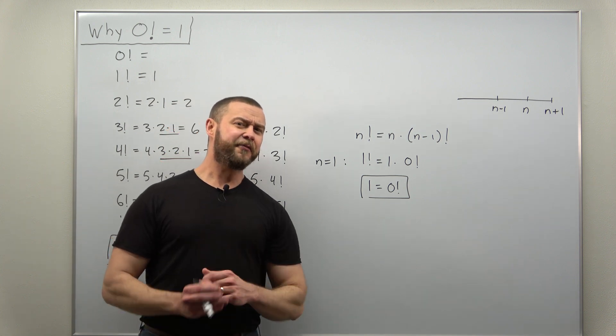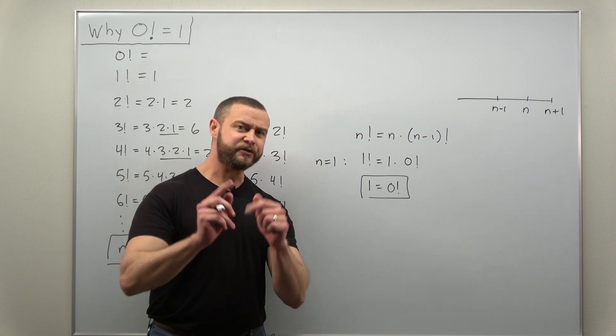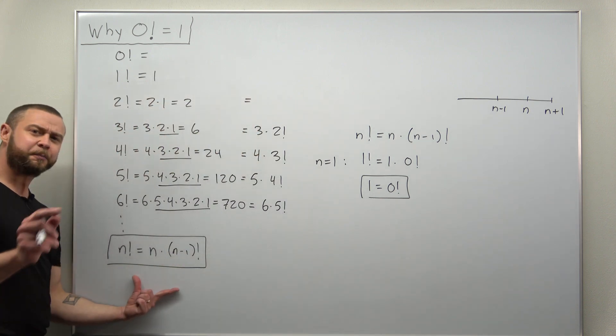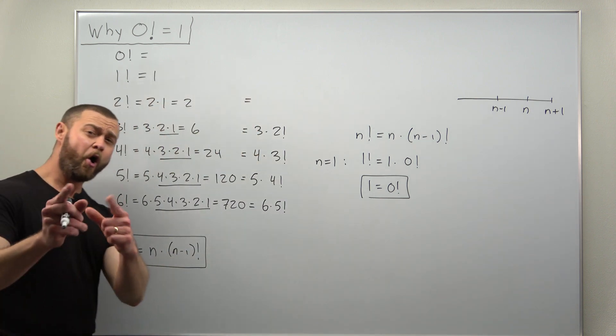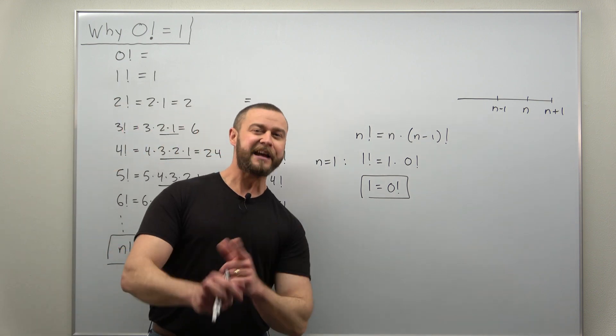No need for the gamma function. Zero factorial is one because we want this property to hold. Hope you enjoyed the video. Like and subscribe.